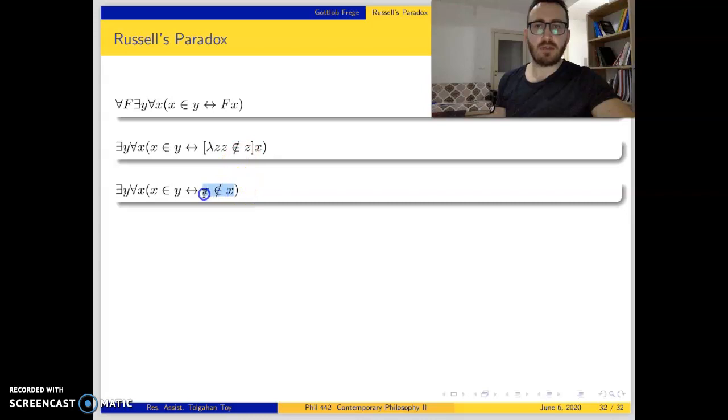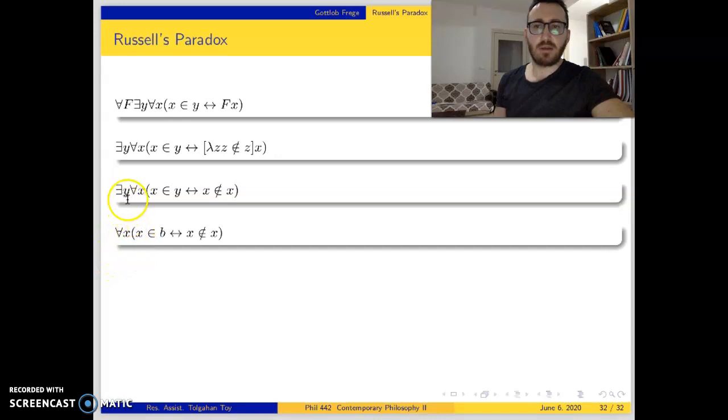Then let's do existential instantiation. Since we have an existential quantifier here, for y we have b. b is substituted for y.